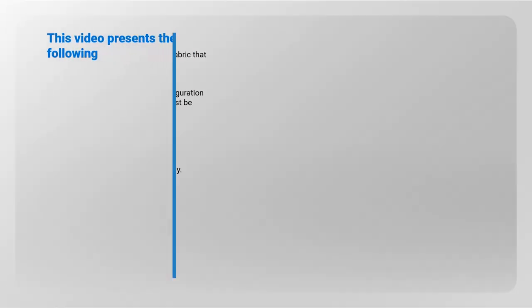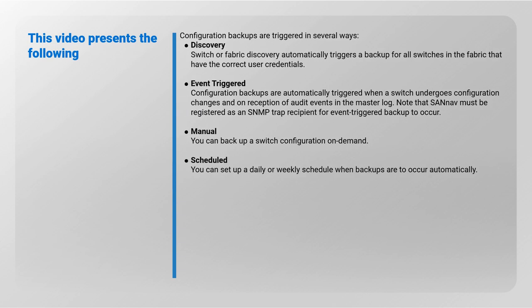Configuration backups are triggered in several ways. Discovery: switch or fabric discovery automatically triggers a backup for all switches in the fabric that have the correct user credentials. Event-triggered: configuration backups are automatically triggered when a switch undergoes configuration changes and on reception of audit events in the master log. Note that SANnav must be registered as an SNMP trap recipient for event-triggered backup to occur. Manual: you can back up a switch configuration on demand. Scheduled: you can set up a daily or weekly schedule for when backups are to occur automatically.